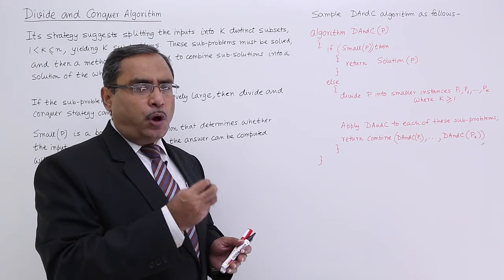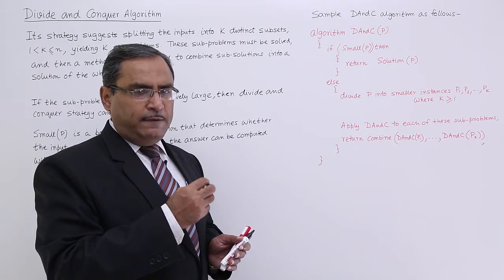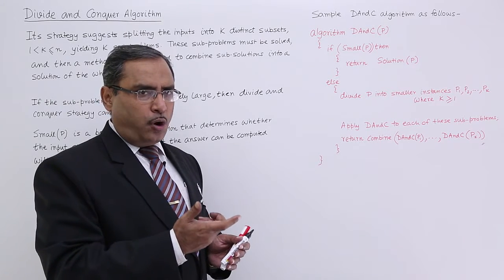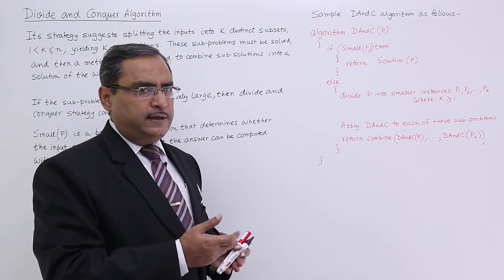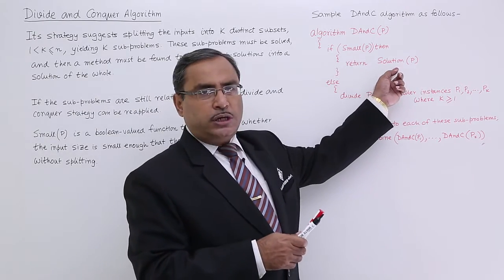If the p size is small enough because small is a function which will return the Boolean. If it returns true, then that means the problem can be solved. It is a solvable problem according to the size and then return solution of the problem.